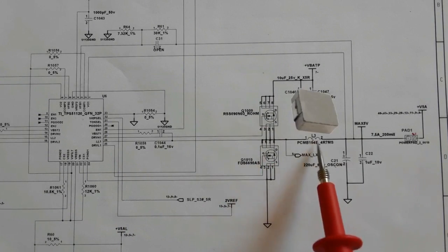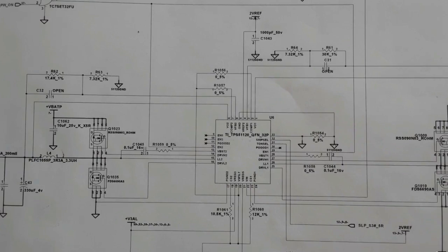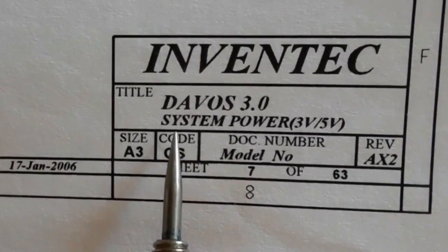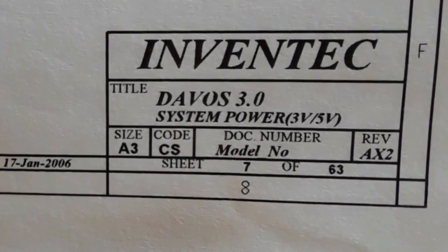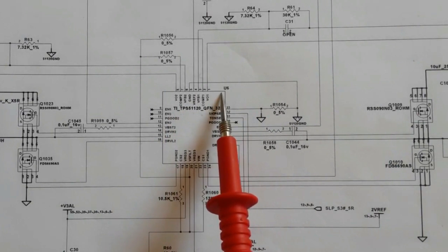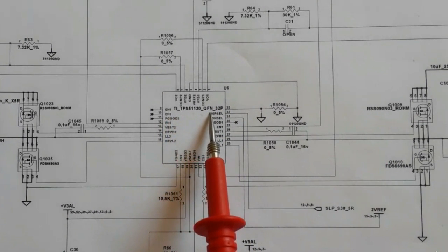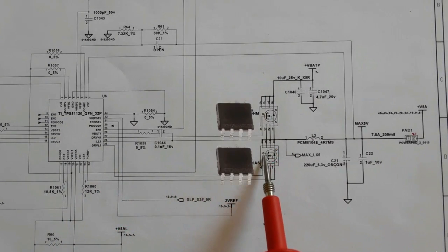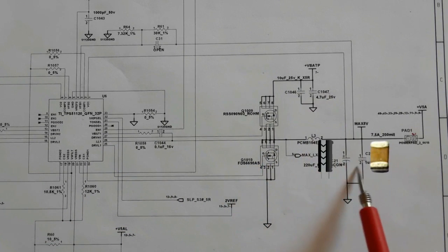We have two MOSFETs, an inductor, and two capacitors. We're going to look at the 3-volt and 5-volt power system. This is the power management IC — the TPS51120, referenced as U6. In the first channel, or the 5-volt channel, we have two MOSFETs, an inductor, and two capacitors.